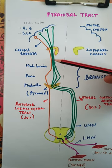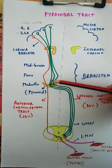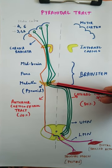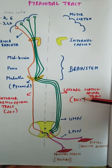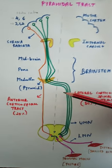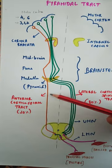It passes through the midbrain, pons, and medulla. In the medulla, in the pyramid, 80% of fibers cross to the opposite side, which is called the lateral corticospinal tract. 20% of fibers descend on the same side, which is called the anterior corticospinal tract.